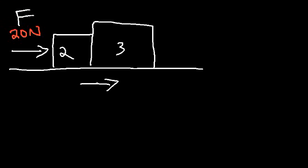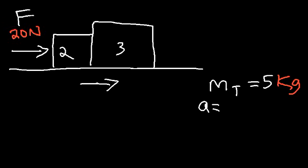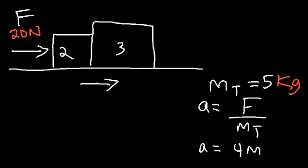How can we calculate this force? First, let's find the total mass of the system. The total mass is two plus three, or five kilograms. Now, what is the net acceleration of the system? The acceleration is going to be the applied force divided by the total mass, based on Newton's second law, F equals MA. So A is F divided by M — that's 20 over 5, which is 4 meters per second squared.